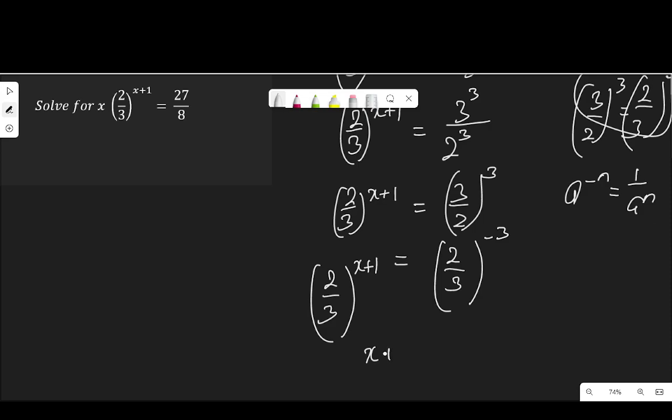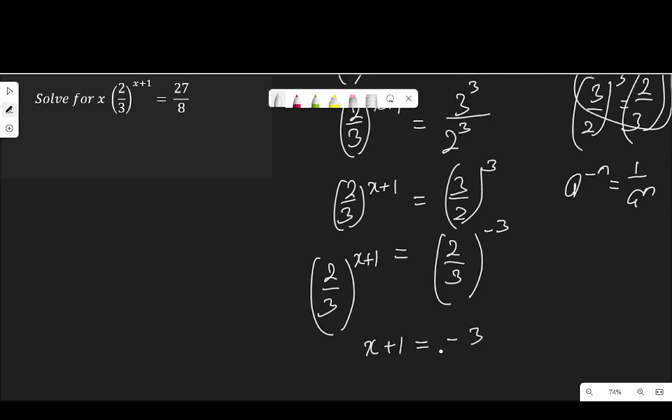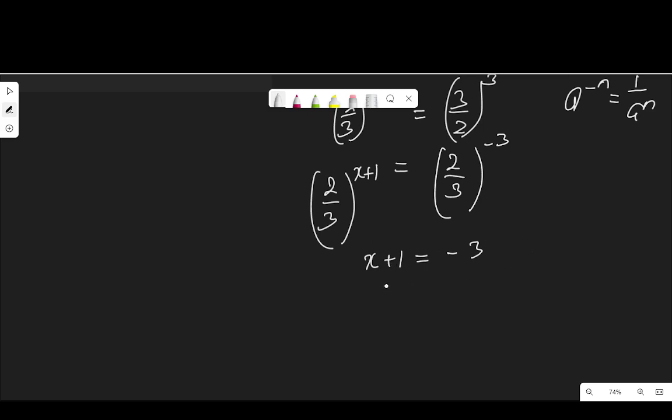That means x plus 1 is equal to negative 3. And then moving plus 1 to the other side, when plus crosses the sign of equality it becomes minus. I have x equals minus 3 minus 1, which is negative 4.